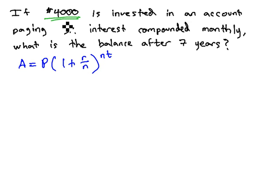$4,000 is invested, that's the starting amount or our principal. It's paying 3%, that's our interest rate as a decimal is .03. Compounded monthly, at least right now, we're going to change that in a minute.